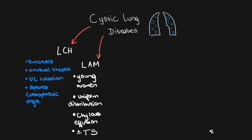The next differential to consider is lymphangioleiomyomatosis, or LAM. This is a condition that occurs in young women of childbearing age or in patients with tuberous sclerosis. Unlike LCH, the cysts are usually of uniform shape and also uniformly distributed throughout the lungs. A feature quite specific to LAM is that patients usually have chylous effusions.